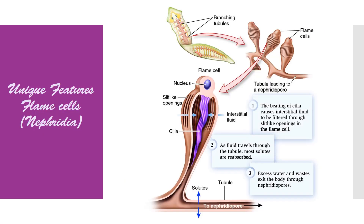In these organisms, excretion occurs with the help of nephridia or flame cells. These nephridia are distributed throughout the whole body in the form of a network. Here in the diagram, these minute cells are the flame cells, and here we have shown a longitudinal section of a flame cell. These cells have cilia to cause the flow of body fluid through them.